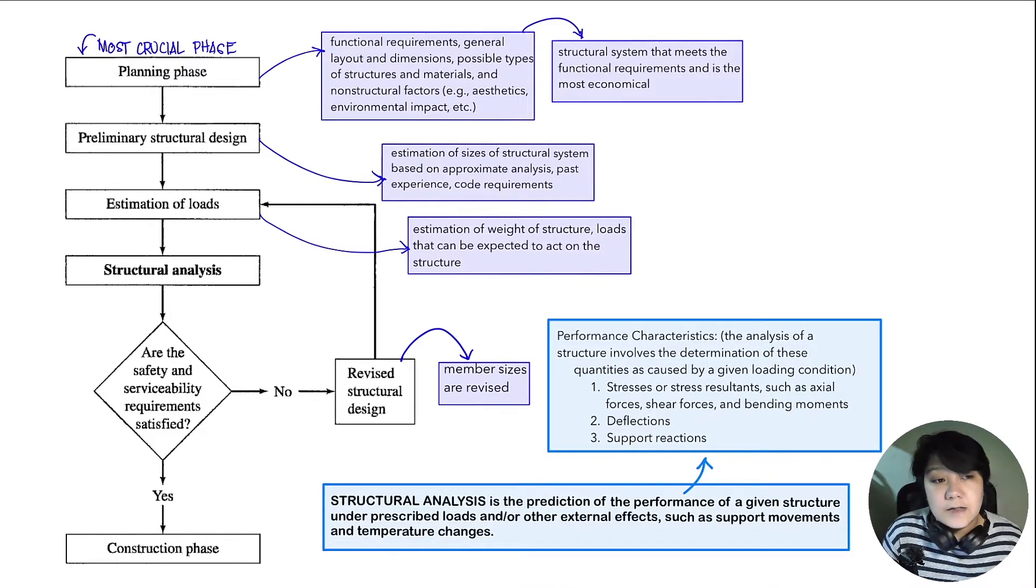The next step is your general layout and dimensions. How are we going to arrange these different rooms? And what are their dimensions or sizes going to be? The next one is the principal types of structures and materials that we're going to use for our building. The most common materials that we use in construction are reinforced concrete and structural steels. Some other non-structural factors might also be considered in this phase.